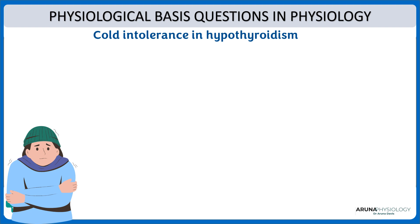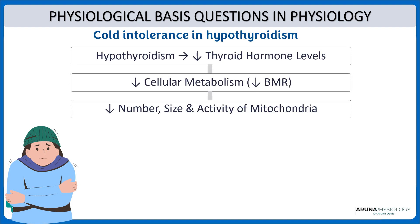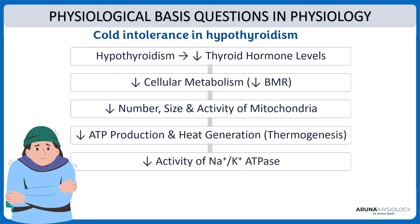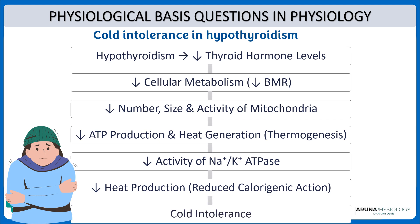What about cold intolerance in hypothyroidism? The mechanism is just the opposite. In hypothyroidism we have decreased thyroid hormone levels, which means decreased cellular metabolism, decreased number, size and activity of mitochondria, and naturally decreased ATP production. There will also be decreased activity of the sodium-potassium ATPase pump, leading to decreased heat production and thereby reduced calorogenic action. So there will be cold intolerance — basically due to the effect of thyroid hormone on basal metabolism.